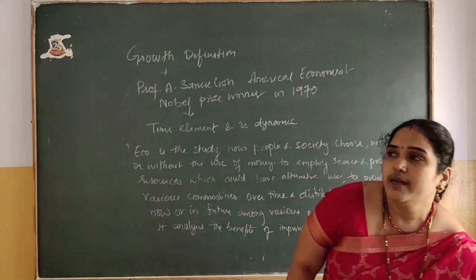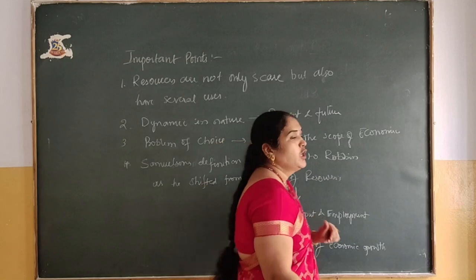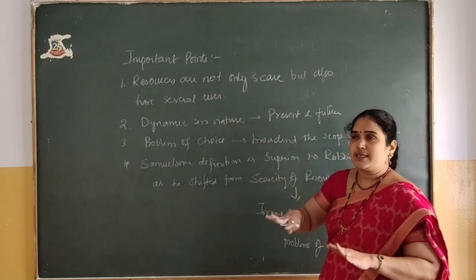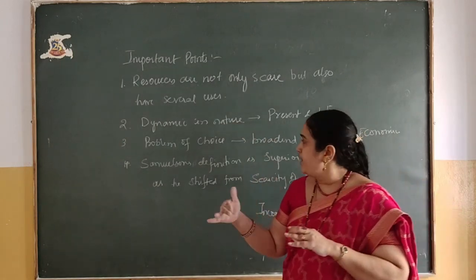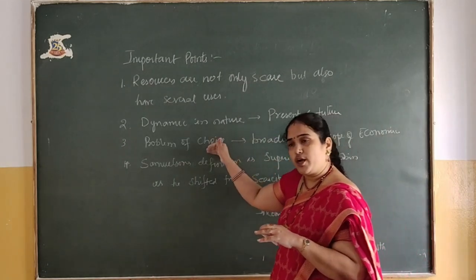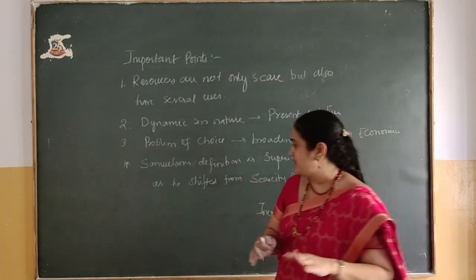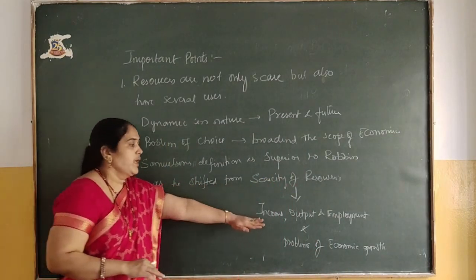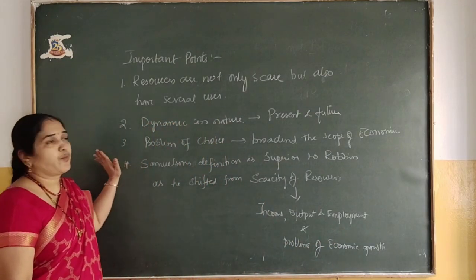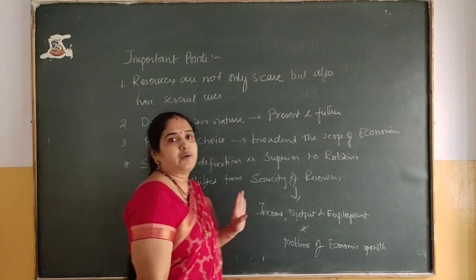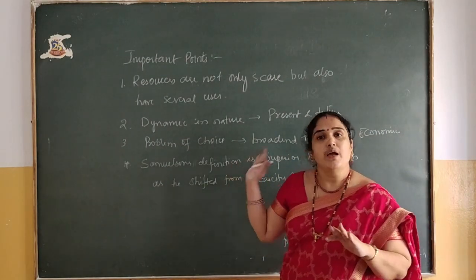The important points of Professor Samuelson's growth definition are: resources are not only scarce but also have several uses. He regarded economics as dynamic in nature — goods produced will be used not only in the present but also in the future. There is a problem of choice, but Samuelson broadened the scope of economics. His definition is superior to Robbins' scarcity definition because he shifted emphasis from scarcity of resources to income, output, and employment, and also stated the problems of economic growth. Professor Samuelson's definition is therefore superior to Adam Smith's, Alfred Marshall's, and Robbins' definitions.